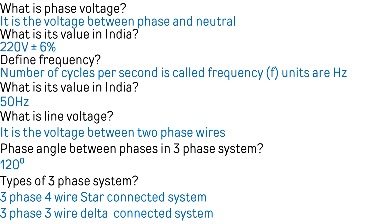What is line voltage? Line voltage is the voltage between two phase wires. What is the phase angle between phases in a three-phase system? 120 degrees. What are the types of three-phase systems? Three-phase four-wire star connected system and three-phase three-wire delta connected system.